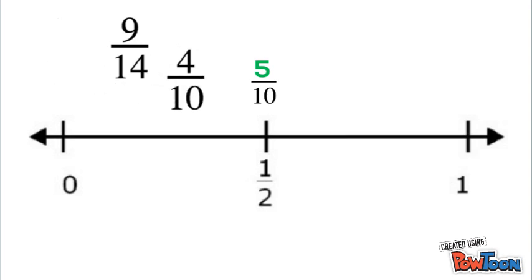Next, we see that the 4 in the numerator is less than 5 tenths. So 4 tenths is just to the left of 5 tenths. So we'll put it just to the left of 1 half.